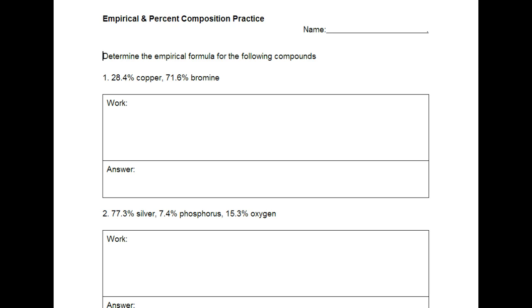In order to do the empirical formula practice for tonight, you're going to be given percentages for different elements. These are elements, not molecules. So it's 28.4% copper and 71.6% bromine in a certain molecule. So what you're trying to figure out is what the subscripts will be based off of these percentage points.